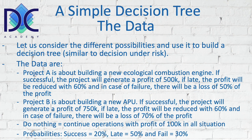Project B is about building a new APU — an auxiliary power unit, a kind of engine in the tail of large airplanes used to start the main engines. If Project B is successful, it will generate a profit of 750k. If late, the profit is reduced by 60 percent. In case of failure, there is a loss of 70 percent of the profit. The Do Nothing option continues operations with a profit of 100k in all situations. The probabilities are: success 20 percent, late 50 percent, and failure 30 percent.